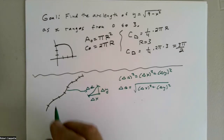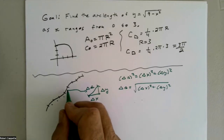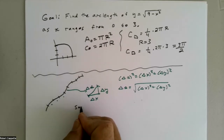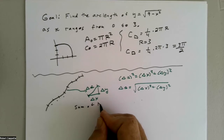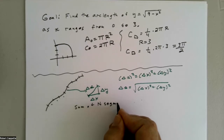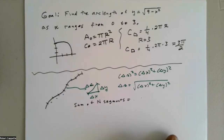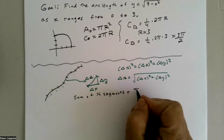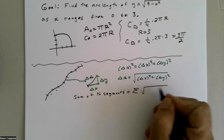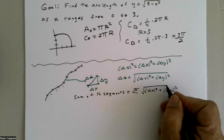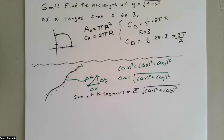That's only for one little piece. I have all of these pieces — this piece plus this piece plus this piece. So the total arc length, the sum of n pieces, will be the sum of n segments, each equal to √(Δx² + Δy²).